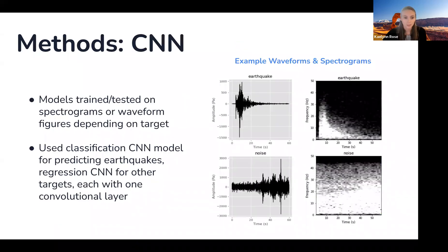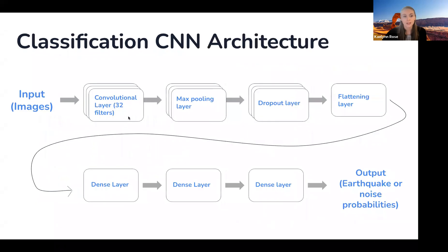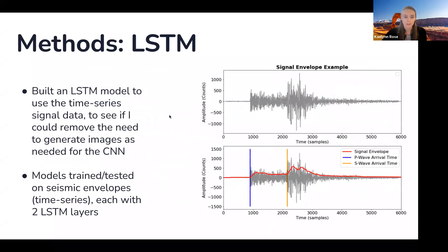For my CNN models, I trained and tested the CNNs on spectrograms or waveform figures depending on the target. The waveforms are shown here, the spectrograms are shown here, and the top row is example earthquake signals while the bottom row is example noise signals. I used the classification CNN for predicting earthquakes and the regression CNN for other targets. Here is the classification CNN architecture: we input the images, then there's one convolutional layer, a max pooling layer, dropout layer, flattening layer, and three dense layers.